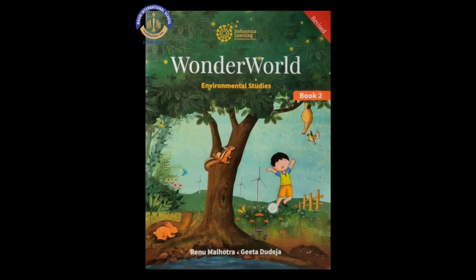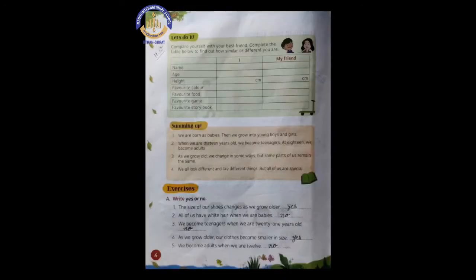And page number 4 you can see it on my screen also, okay? So let's start with the first homework, that is Let's Do It. Now first read the instruction. What you have to do? Compare yourself with your best friend. Complete the table below to find out how similar or different you are.